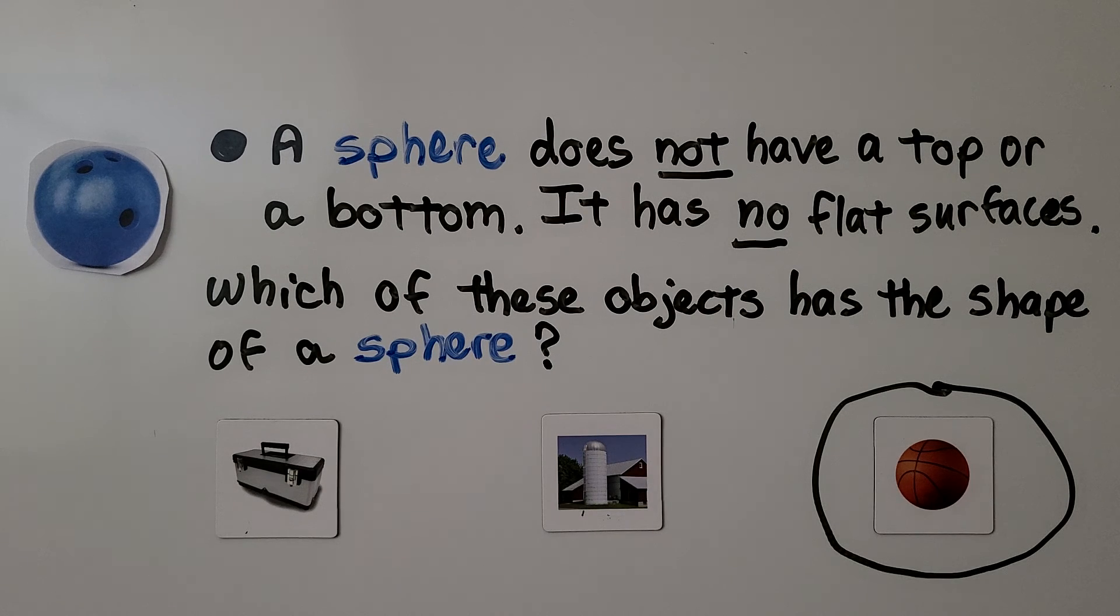And this is a rectangular prism. So we have a rectangular prism, a cylinder, and a sphere.